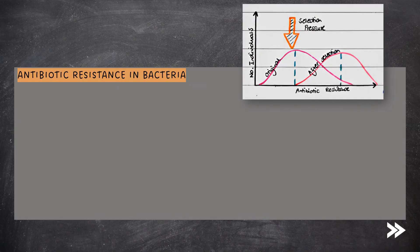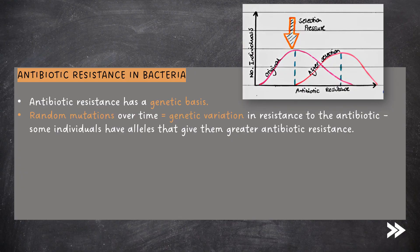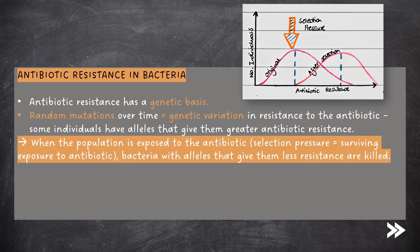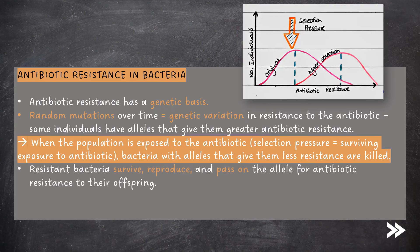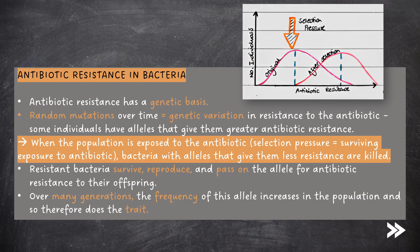Let's have a look at the example of antibiotic resistance in bacteria. Antibiotic resistance has a genetic basis. Random mutations over time mean that there is genetic variation in resistance to the antibiotic. Some individuals will have alleles that give them greater antibiotic resistance. When the population is then exposed to the antibiotic — the selection pressure being surviving exposure to the antibiotic — bacteria with alleles that give them less resistance are killed. The more resistant bacteria survive, reproduce and pass on the allele for antibiotic resistance to their offspring. The frequency of this allele increases in the population, and so therefore does this trait.